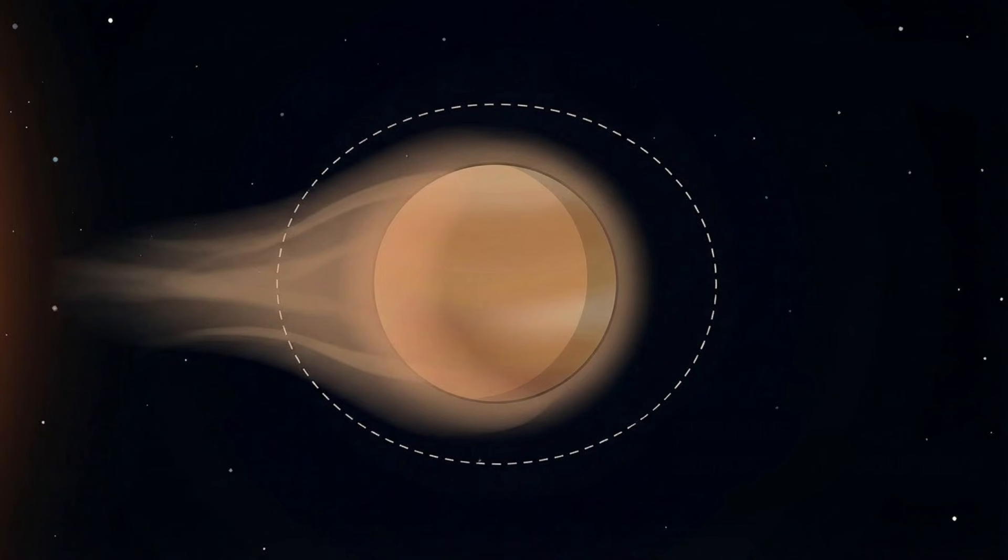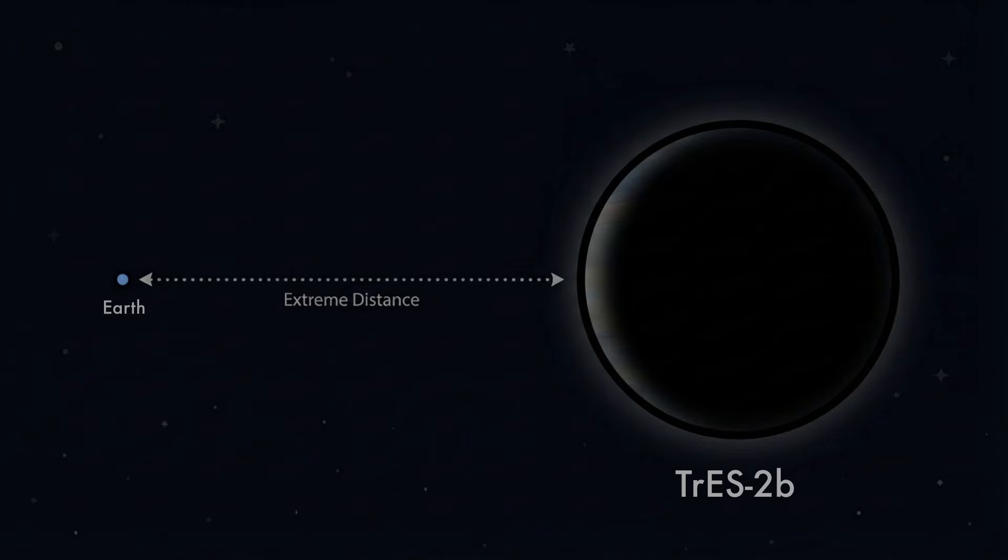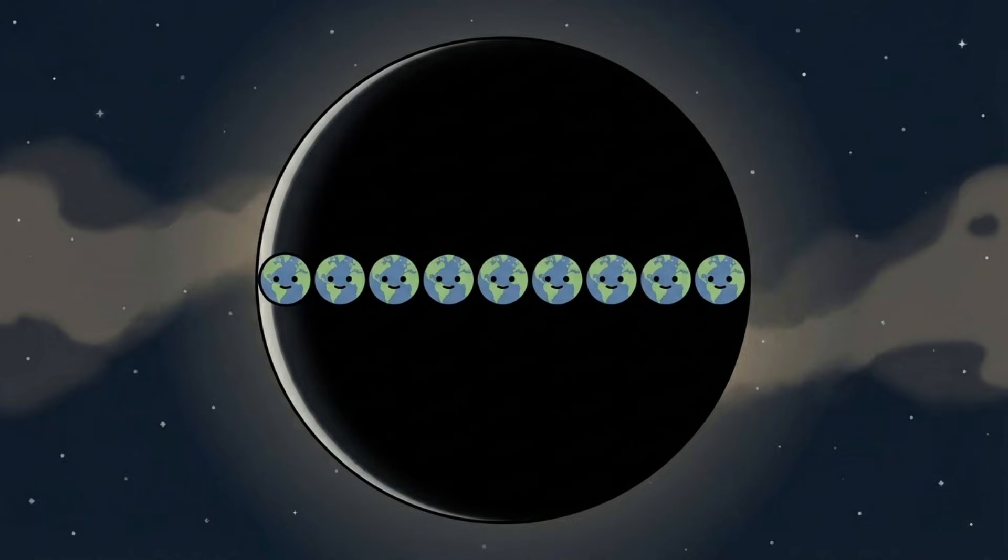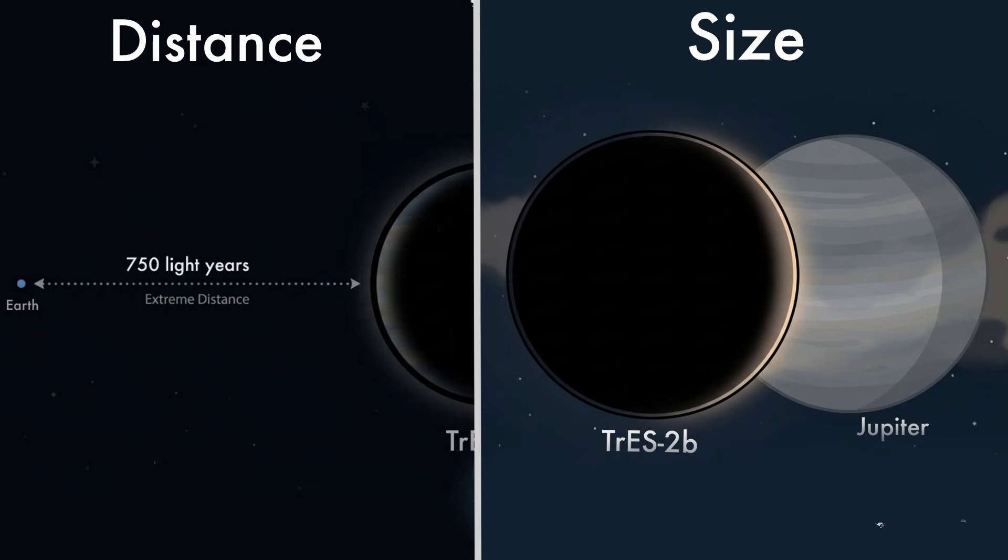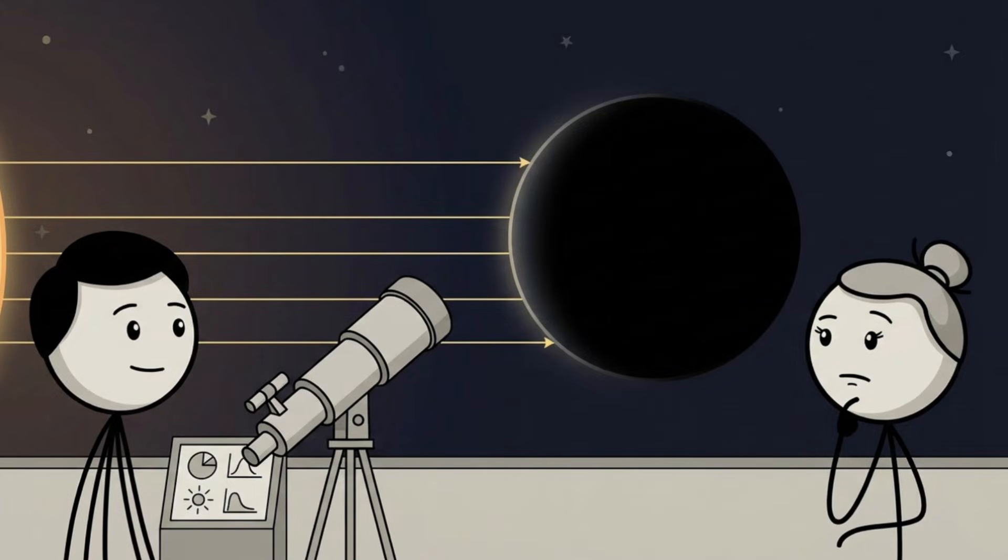TRES-2b, the darkest planet ever found. TRES-2b is located about 750 light-years from Earth. It is a gas giant similar in size to Jupiter, more than 11 times wider than Earth, and it completes one orbit around its star in just 2.5 Earth days. By distance and size alone, it fits neatly into a familiar category. The strange part only becomes clear when astronomers measure how it interacts with light.